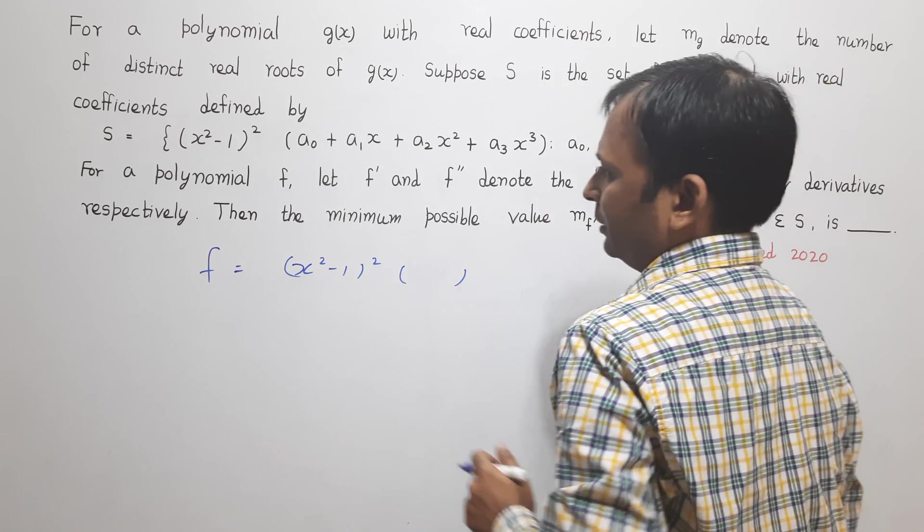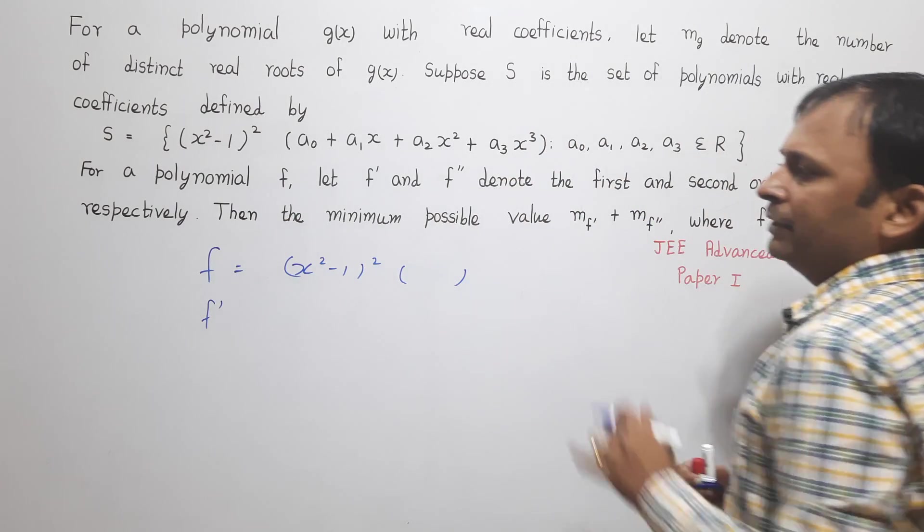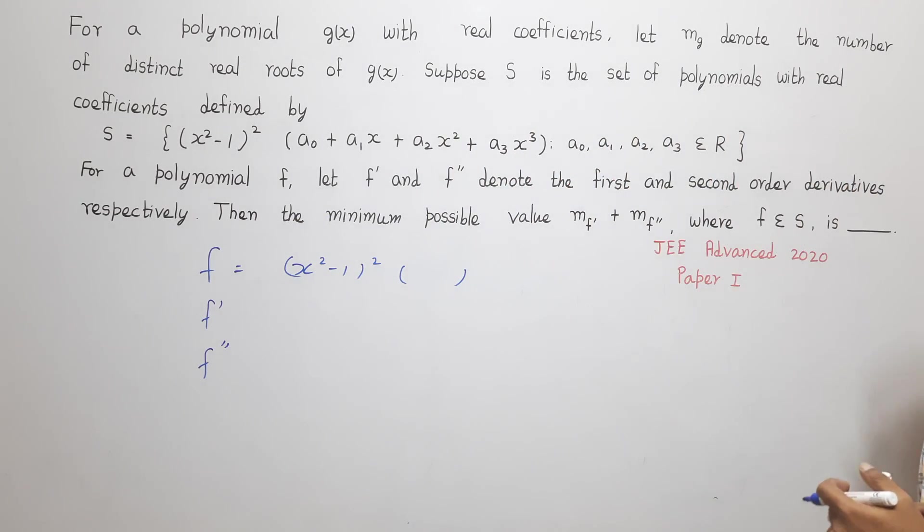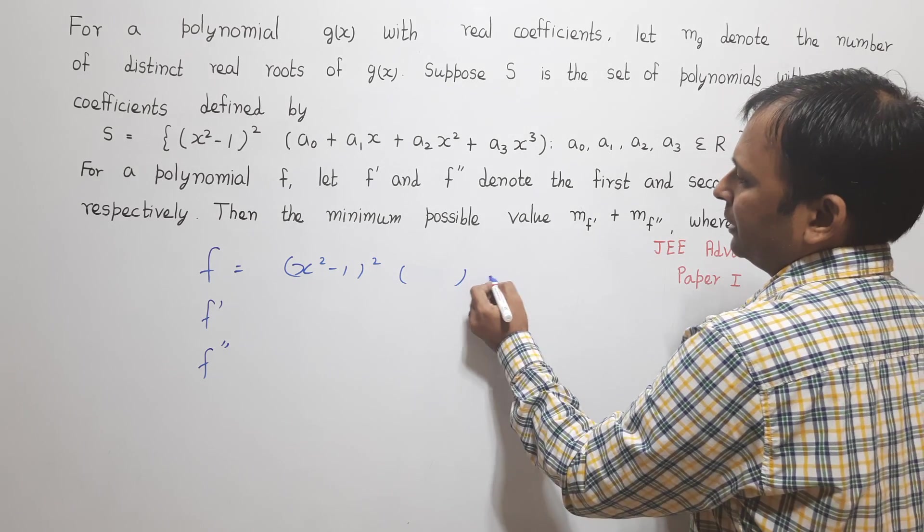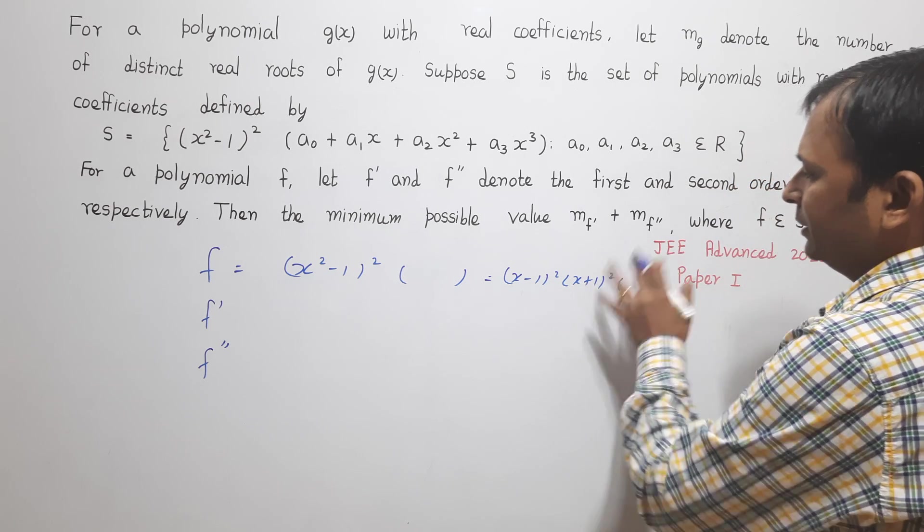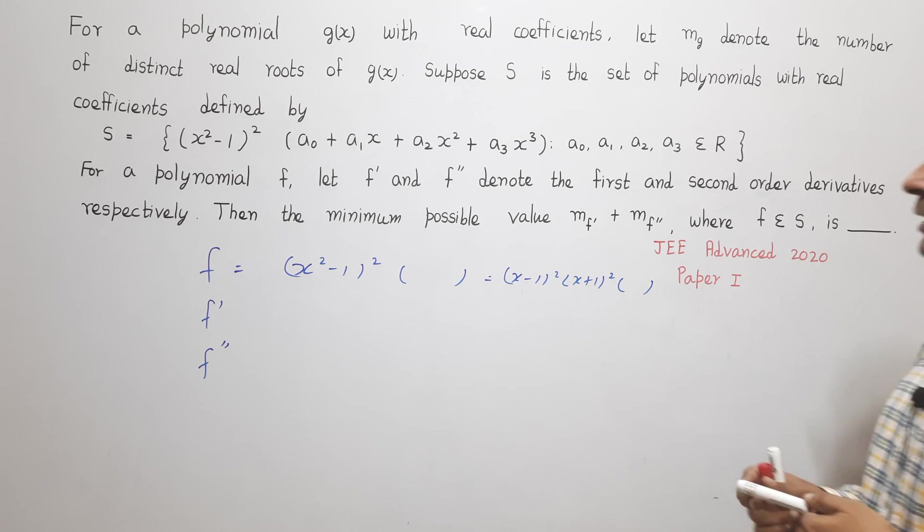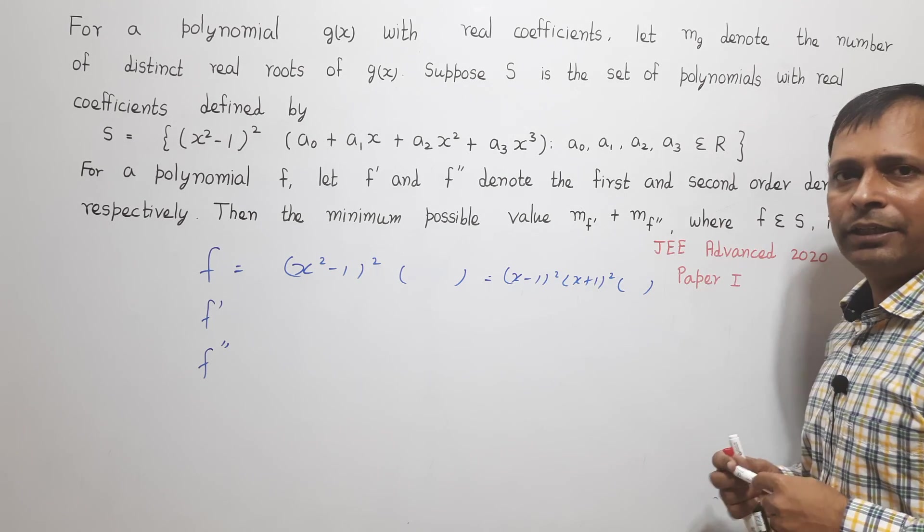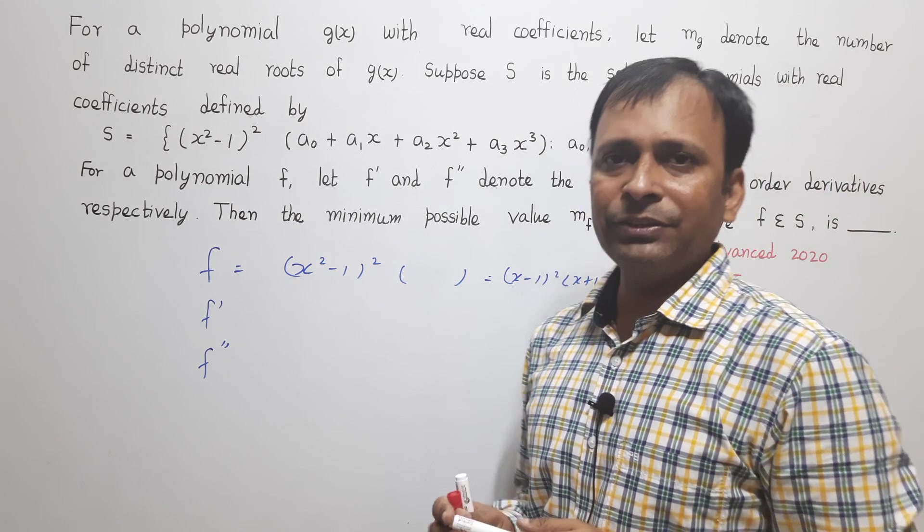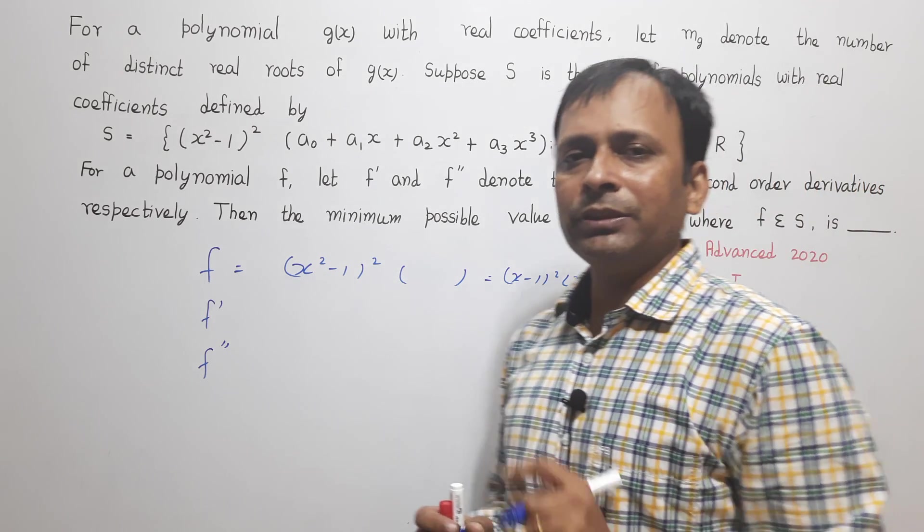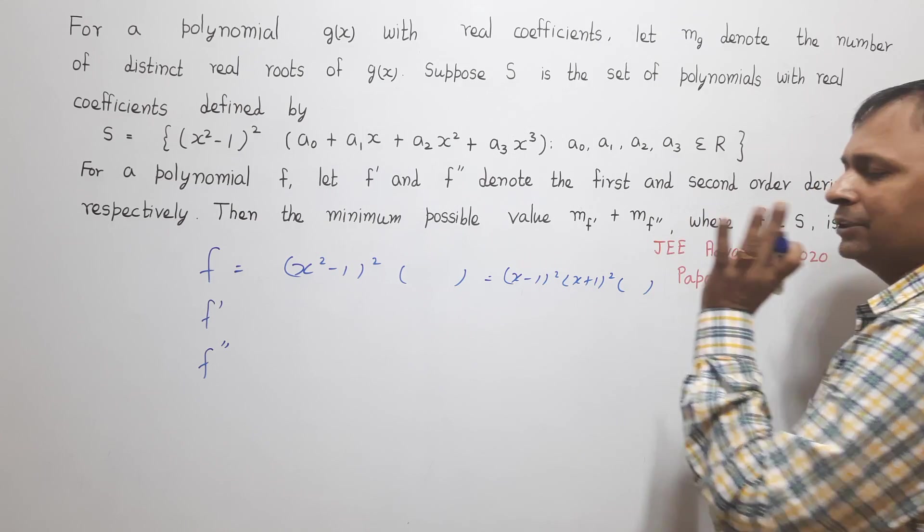Now here they have also defined f' which is the first derivative of f and they have defined f'' which is the second derivative of f. Now this f I can also write it as (x-1)²(x+1)² into the bracket whatever is there. If I see this function f, what I can conclude is first, this f will have a double root at x = 1 and a double root at x = -1. That means this polynomial, if I take the derivative of this polynomial, the derivative must have one root x = 1 and x = -1.